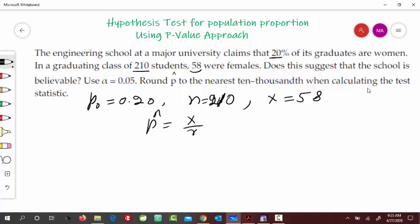That is x by n. So that's 58 by 210, which would be equal to, as per our requirement, computed to that ten-thousandth, nearest ten-thousandth. So that would come up like 0.2762. So that's the information that we have collected.